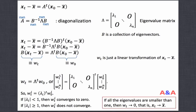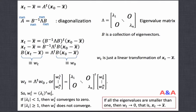We multiply matrix B from the left to both sides and introduce new notation: we denote B times the date-t deviation as W_t, and B times the date-0 deviation as W_0. Here, W is just a linear transformation of the variable of interest, x_t minus x-bar. In terms of W, the system becomes very easy: W_t is simply lambda to the power t times W_0.